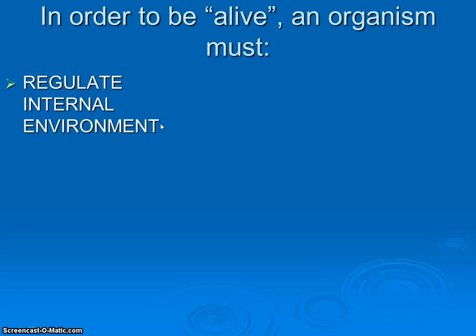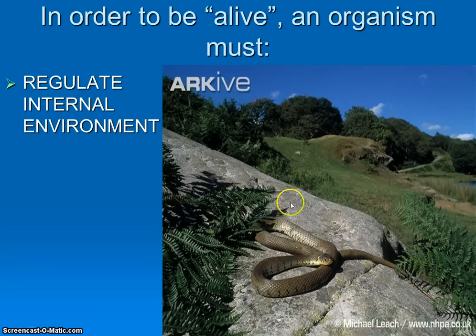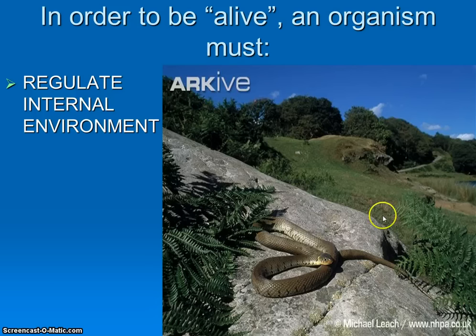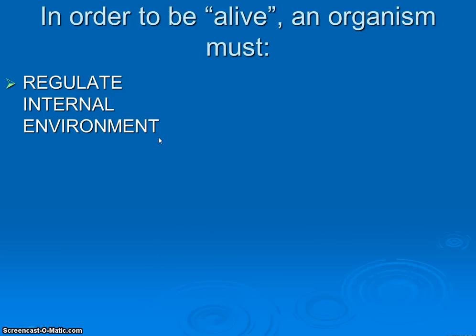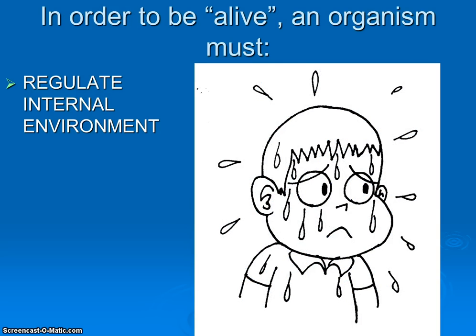Our last one is: regulating the internal environment. All living things have to do it. Here's an example — stop and think about what this is showing. How is this snake regulating its internal environment? What is it trying to regulate by doing so? You can probably figure that out. What's this little cartoon guy doing? Look at the sweat coming off of him. Why do you sweat? Do you choose to sweat, or does your body do it of its own accord? That is regulating the internal environment.